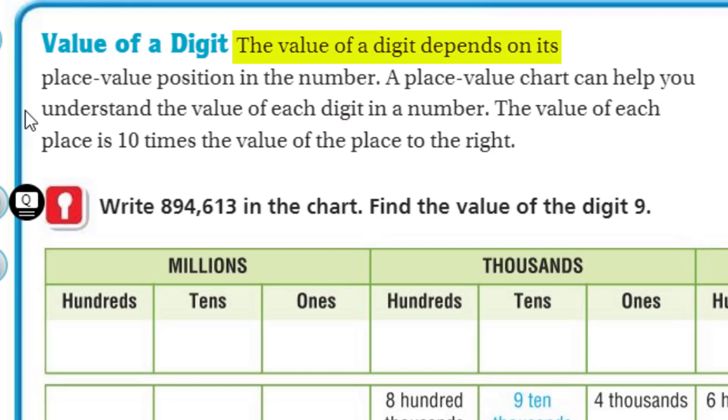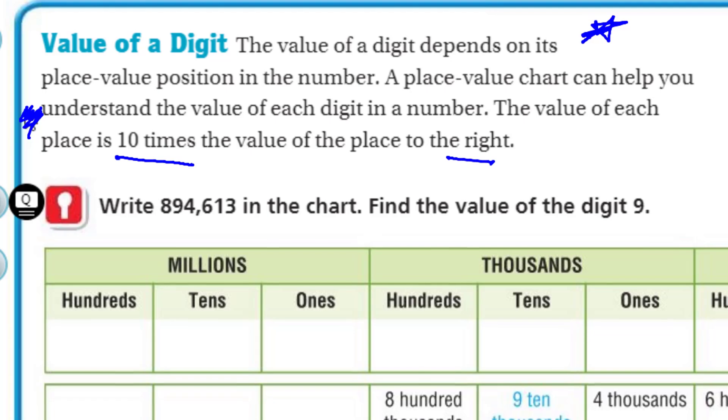The value of a digit depends on its place value position in the number. That is so true. A place value chart can help you understand the value of each digit in a number. The value of each place is 10 times the value of the place to the right. We kind of talked about that. So we write this number 894,613 in the chart.